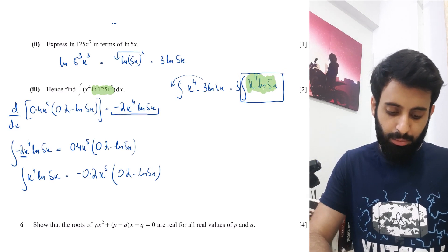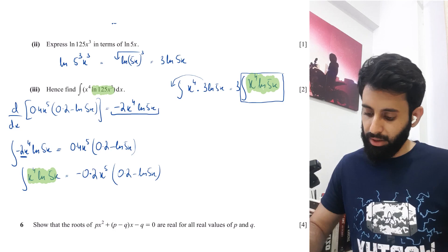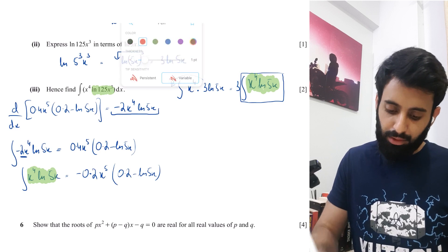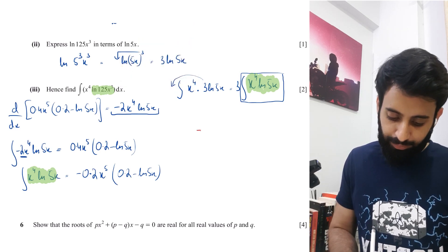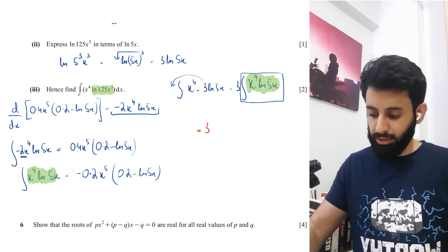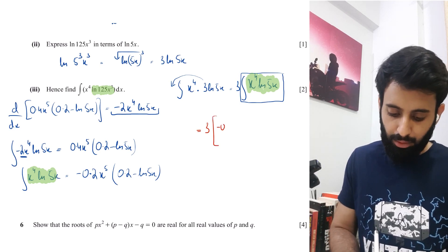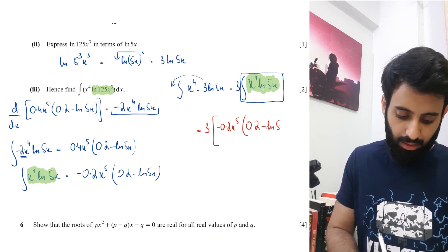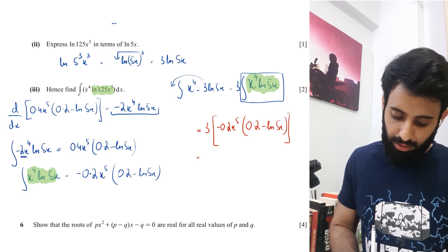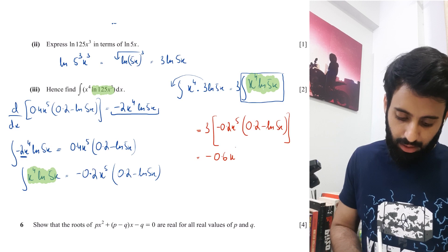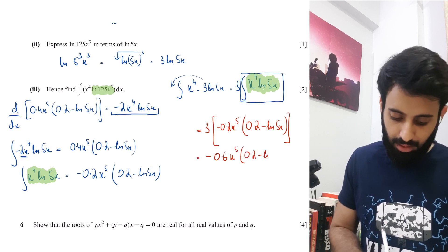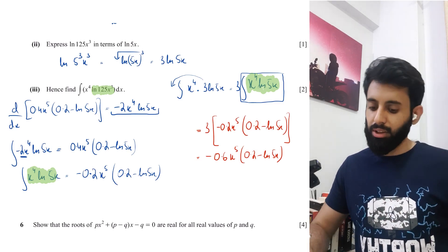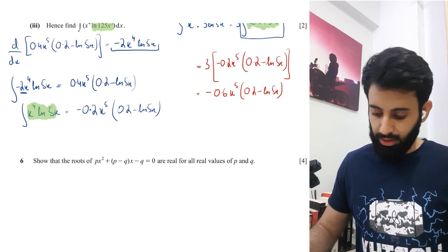Now multiplying by the 3 that was outside: 3 times minus 0.2 = minus 0.6. So the integral of x^4·ln(125x^3) equals minus 0.6x^5(0.2 minus ln5x). That is the final answer for part 3.